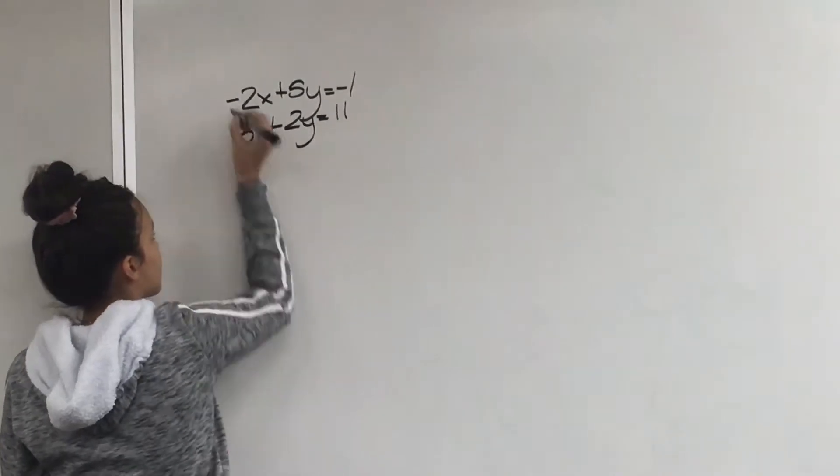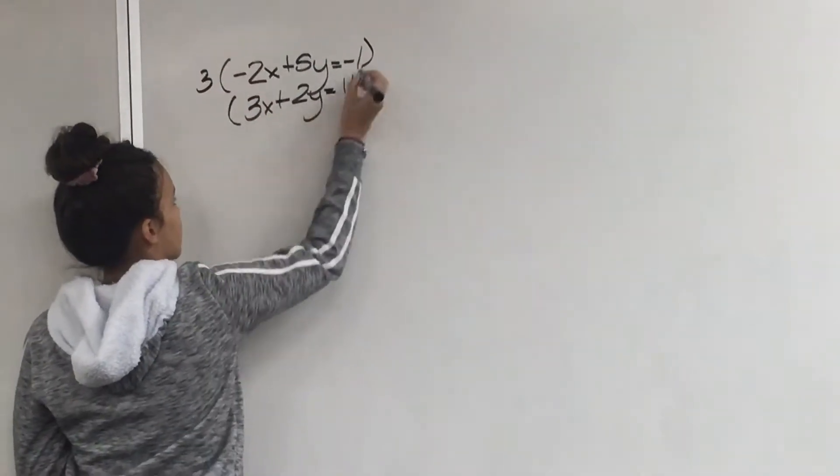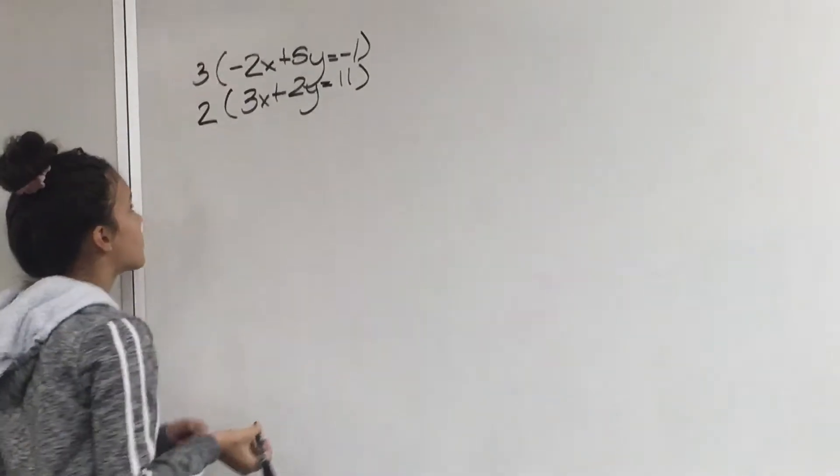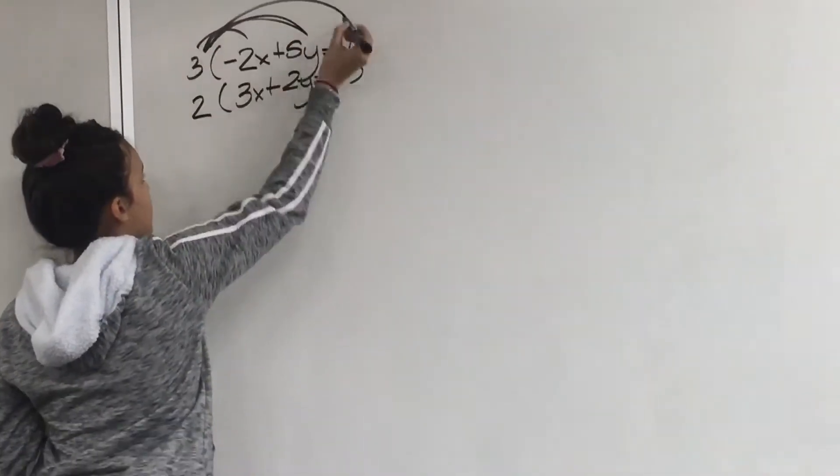First you have to multiply the top equation by 3 and the bottom one by 2, so we can cancel out the x terms. By distributing the 3 on the top equation,